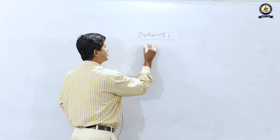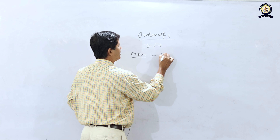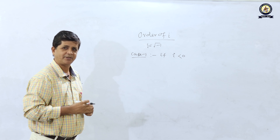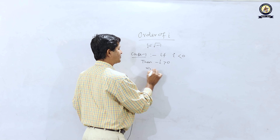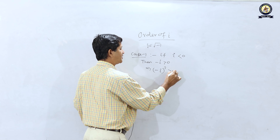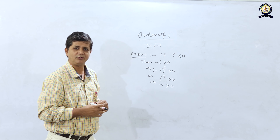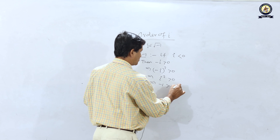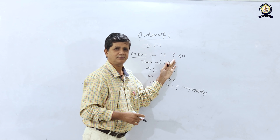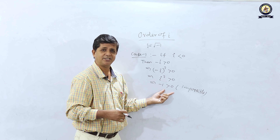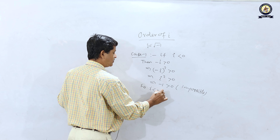i = √(−1). Case 1: if i < 0, then −i > 0, so (−i)² > 0, which gives i² > 0, meaning −1 > 0. This is impossible. So our assumption is wrong — i cannot be less than 0.